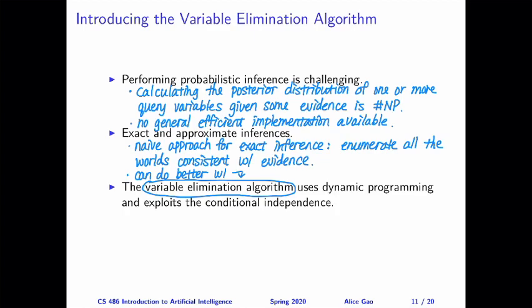We can do better with the variable elimination algorithm by taking advantage of two ideas. The first idea is dynamic programming: when calculating probabilities, many intermediate results are used multiple times, so we do those small intermediate calculations first, save the results, and use them later — avoiding repeated calculations. The second idea is that we use the Bayesian network, which already exploits conditional independence, so we need to specify fewer probabilities and can do less work than directly using the joint distribution.